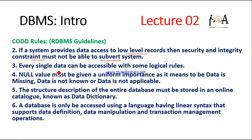The third rule is the Guaranteed Access Rule: every single piece of data must be accessible with some logical rule. If you have data in your table, by using the table name, row name, or field type, you can access the data by applying logical rules. It is guaranteed that every kind of data is accessible.